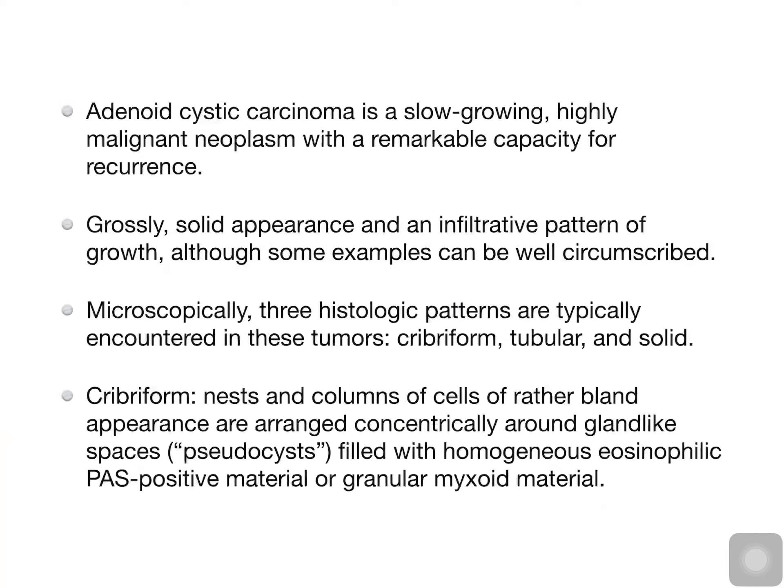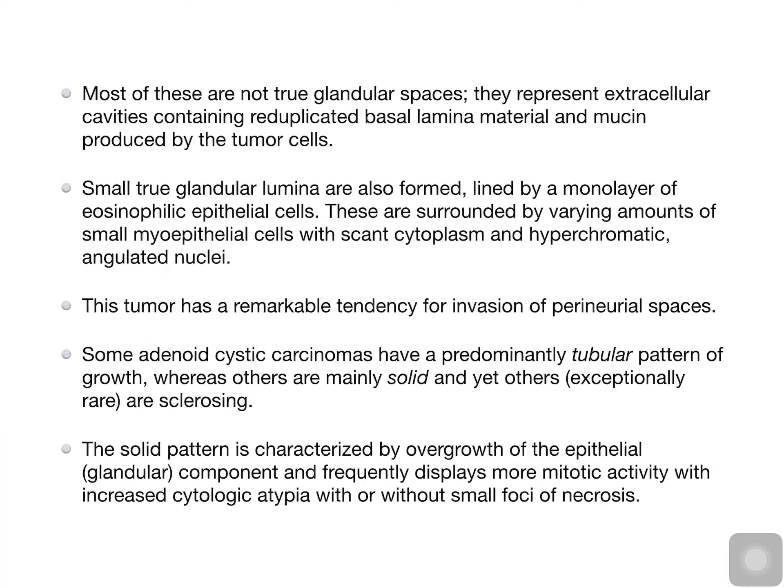In the cribriform pattern, there will be nests and columns of cells of rather bland appearance, arranged concentrically around gland-like spaces — also called pseudocysts — filled with homogeneous eosinophilic PAS-positive material or granular myxoid material. Most of these are not true glandular spaces; they represent extracellular cavities containing reduplicated basal lamina material and mucin produced by the tumour cells.